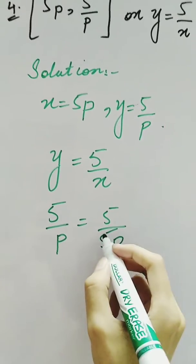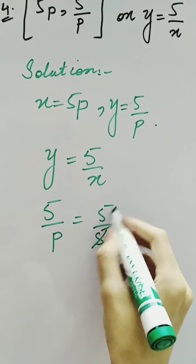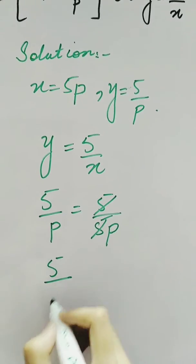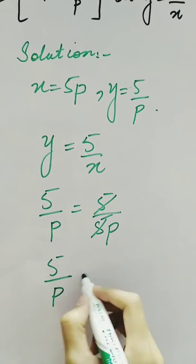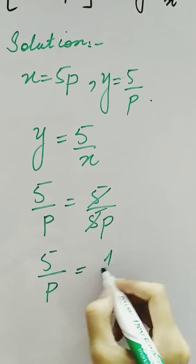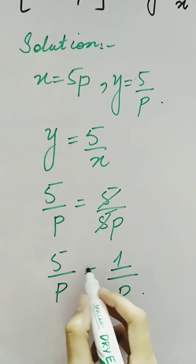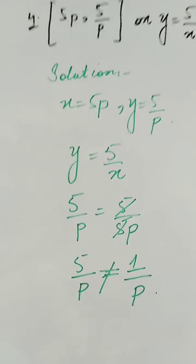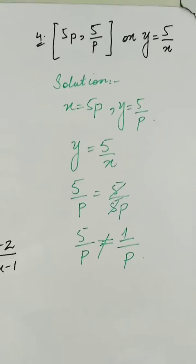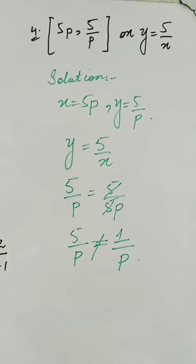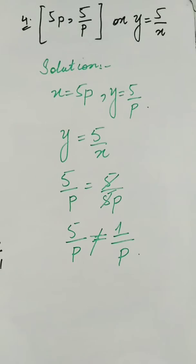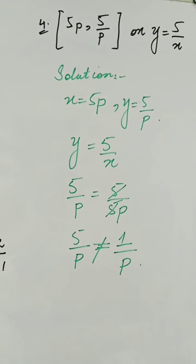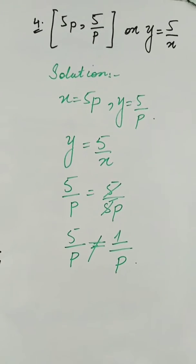After further solving, we will have 5/p = 5/(5p) = 1/p. Now, these two are not equal to each other, which means that the given point doesn't satisfy the given equation — the points don't lie on the given line.